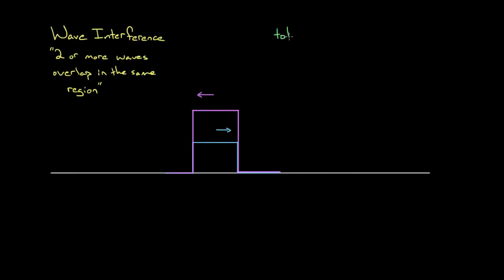In other words, if I want to know the height of the total wave — I'll call that height yt, t for total — that's just gonna equal the height of the first wave, y1, plus the height of the second wave, y2. So if you're familiar with the wave equations, you could just plug in those two wave equations, add them up, and get a total wave equation.